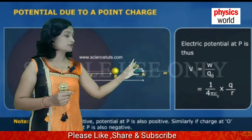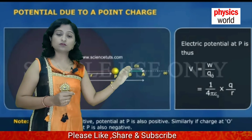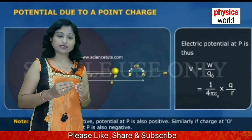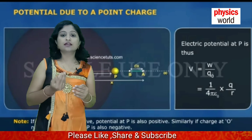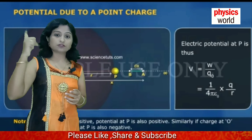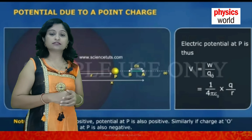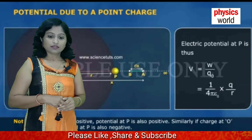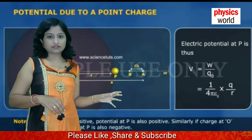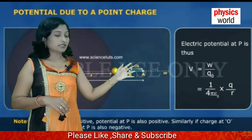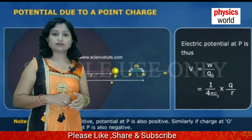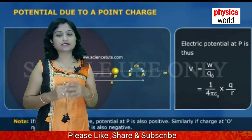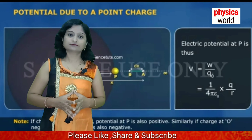This is the final expression for electric potential due to a point charge plus Q, bringing a unit test charge Q₀ from infinity to point A. Hope you understand this expression. If you have any doubt, comment here and I will solve it. Please like our videos, share, and subscribe to our channel. Thank you.